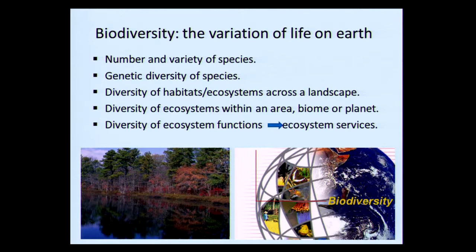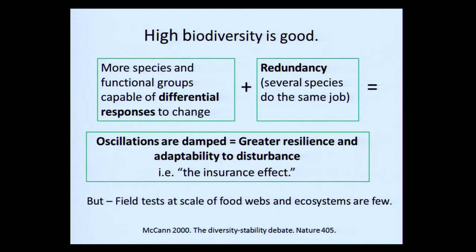Biodiversity includes the complete number and variety of species, diversity of genetics, habitats and ecosystems, and diversity of ecosystem functions. Without sound ecosystem functions and resilience, you won't have the ecosystem services people need. High biodiversity is good — the more species and functional groups you have that are capable of different responses to change, the better off you are when disturbances strike, because you have redundancy: several species that might do the same job under different conditions. Oscillations are damped down and the ecosystem has greater resilience and adaptability — often called the insurance effect.